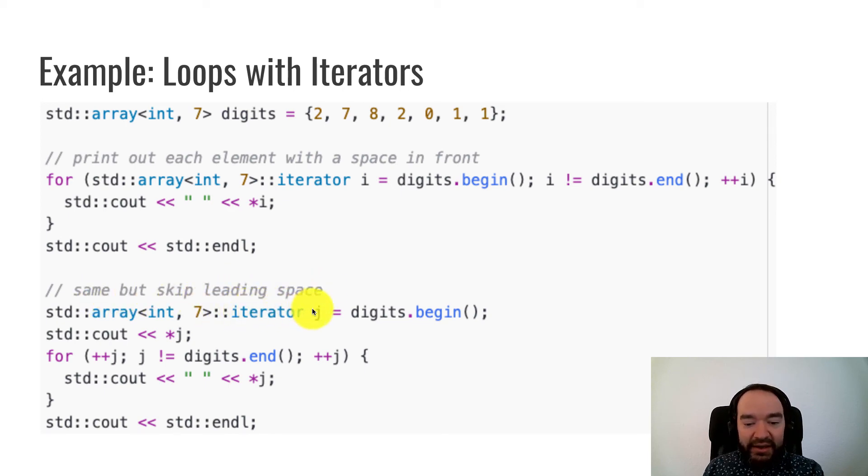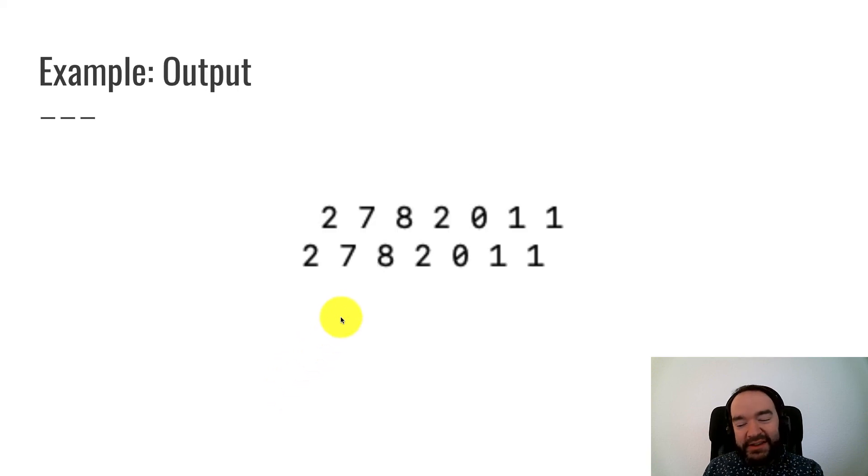So same thing, but we're going to skip that leading space. So what I do is I create an iterator j that's at the beginning, and I print that out for sure with no space in front. And then I keep using j to loop through the remaining elements. So print out dereference j. That dereference j means follow the iterator to get that int. The first one would be 2. Now, I already printed out the first element, so right here I'm doing plus-plus j. That advances the iterator one step, skipping over the 2. And then the rest of the loop is pretty much the same. As long as j is not the end, we'll do a plus-plus j, and the body is print out a space and then j, and then an endline at the end of that. So this is a little tidier. The first element does not have a leading space, but every subsequent element does have a space.